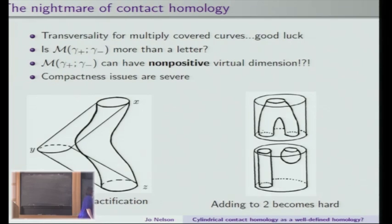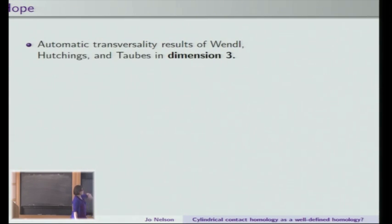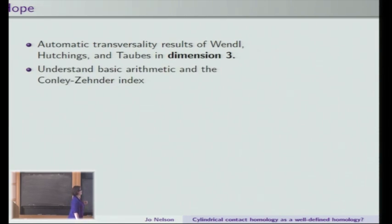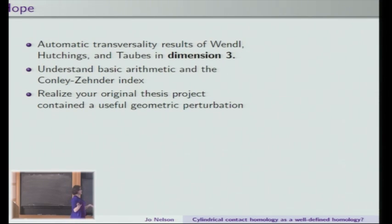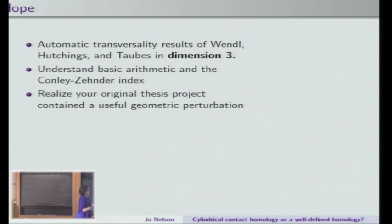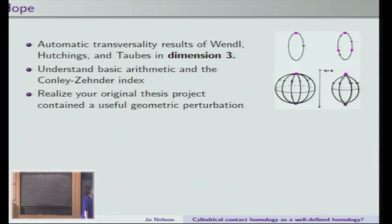If everything has positive virtual dimension, then basically the only way an index-difference-two thing can break is into two index-difference-one cylinders, possibly plus a trivial cylinder. The hope is that people like Wendl, Hutchings, and Taubes have really nice automatic transversality results in dimension three, and if you understand basic arithmetic and how the Conley-Zehnder index works you can appeal to them. But it's not awesome if you only abstractly understand this, because you still have to produce a perturbation of a contact form whose Reeb orbits satisfy the required arithmetic and Conley-Zehnder index properties to invoke those automatic transversality results. And so you realize that your original thesis project was not actually completely useless, and you can pull out a nice perturbation from it.